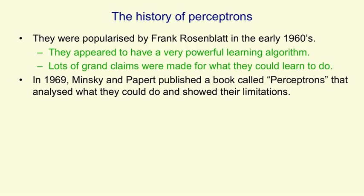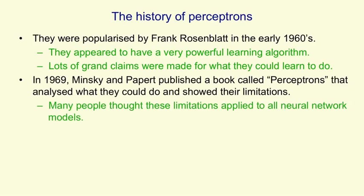In 1969, Minsky and Papert published a book called Perceptrons that analysed what perceptrons could do and showed their limitations. Many people thought those limitations applied to all neural network models, and the general feeling within artificial intelligence was that Minsky and Papert had shown that neural network models were nonsense. Minsky and Papert themselves knew they hadn't shown that — they'd just shown that perceptrons of the kind for which the powerful learning algorithm applied could not do many things by learning. But that result got wildly overgeneralised, and when I started working on neural network models in the 1970s, people kept telling me that Minsky and Papert had proved these models were no good.